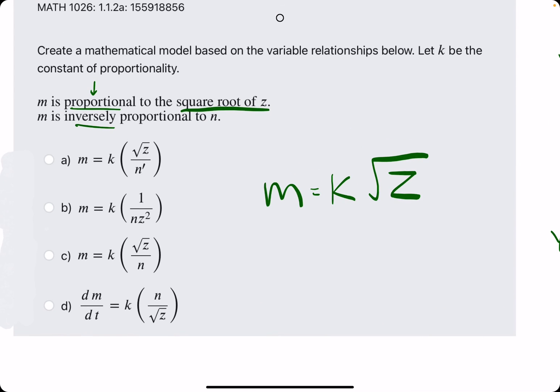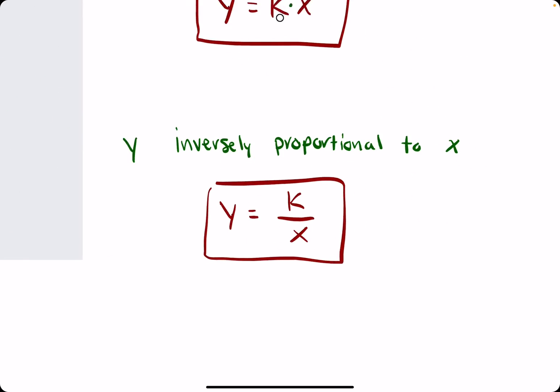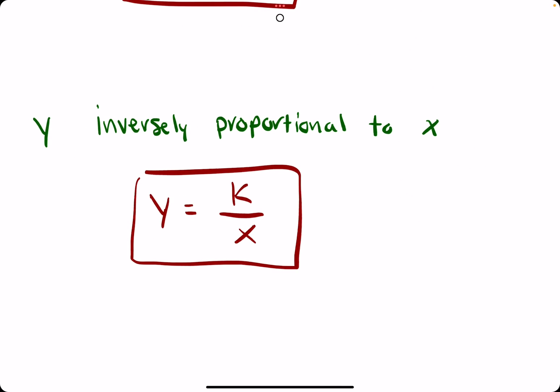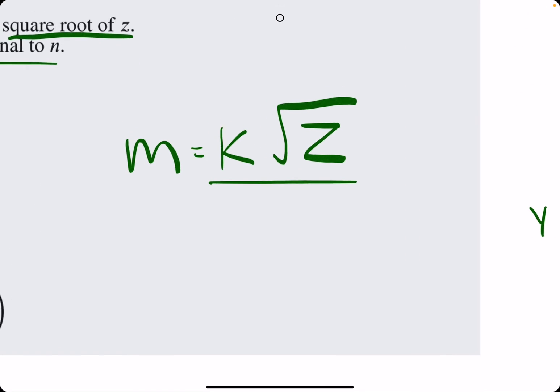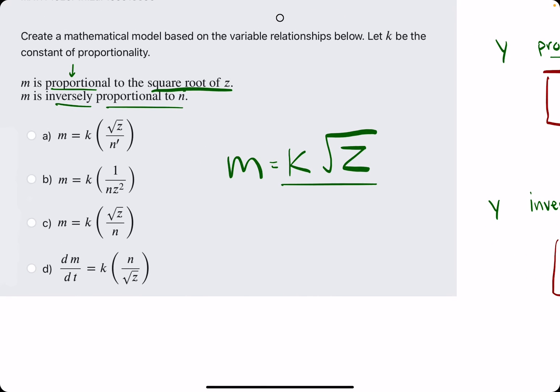And then they say m is inversely proportional to n. So over here, inversely proportional to x meant that we threw x in the denominator. Same rule applies here. We will use what we've already constructed and just throw n in the denominator.